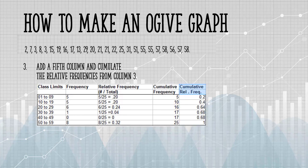For the fifth column, we're going to accumulate the relative frequencies from column 3. For example, my first row is 0.2. My second row is the accumulation of the first two rows. So 0.2 plus 0.2 is 0.4.